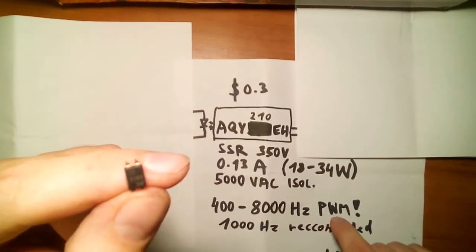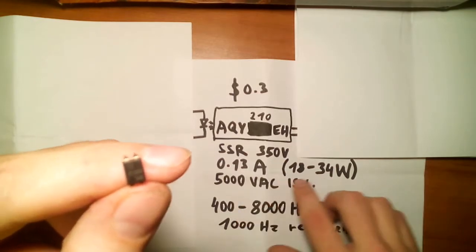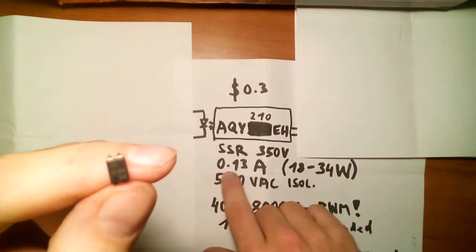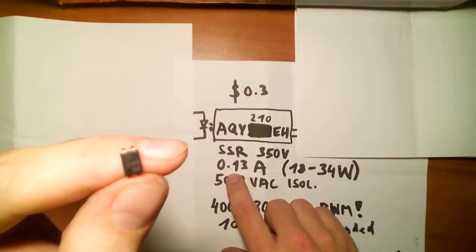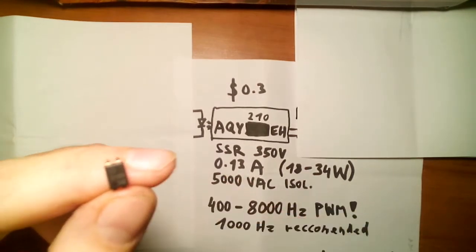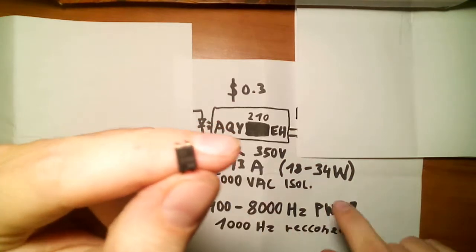However, it also means that it can only handle small power, like 18 to 30 watts. It's rated for 0.13 amps, and it provides a few 5kV of isolation.